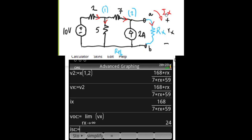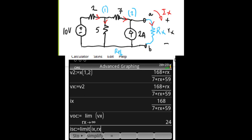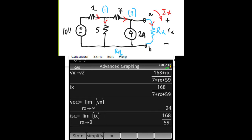As the limit of Ix when Rx tends to zero, you're right. So that is limit of Ix as Rx tends to zero. There. And that is Ix short circuit.